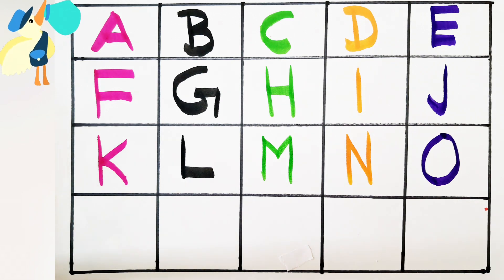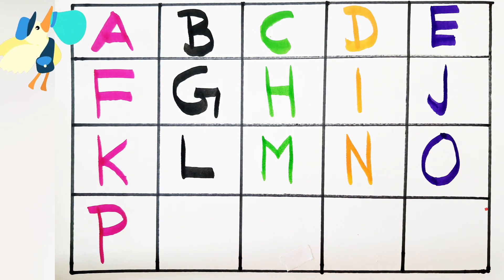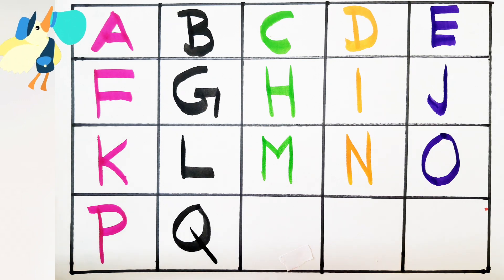Next letter: P - P for pink and P for parrot. Next letter: Q - Q for queen and Q for quiet.